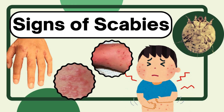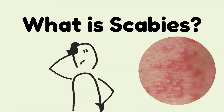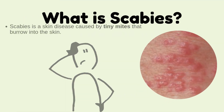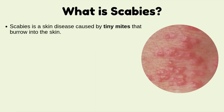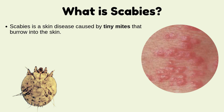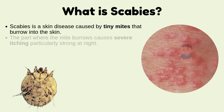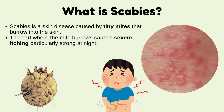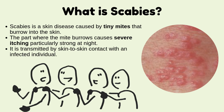Signs of Scabies. What is scabies? Scabies is a skin disease caused by tiny mites that burrow into the skin. The part where the mite burrows causes severe itching, particularly strong at night. It is transmitted by skin-to-skin contact with an infected individual.